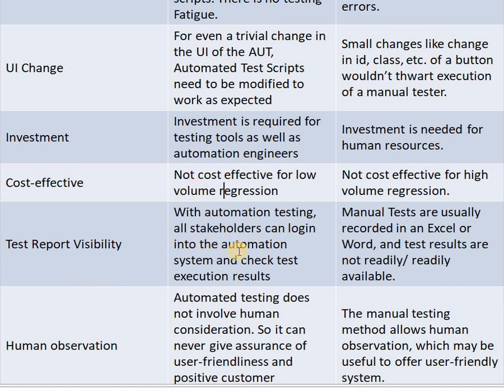Next parameter is test report visibility. With automation testing, all stakeholders can log into the automation system and check test execution results. In manual testing, test results are usually recorded in Excel or Word and may not be readily available. In automation testing, anyone can log in and check results, making it more flexible.